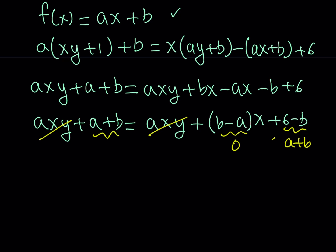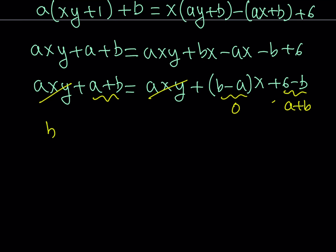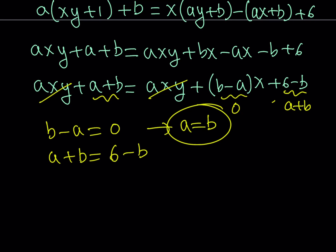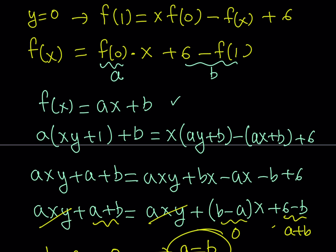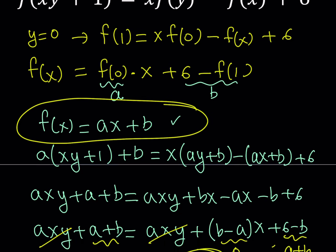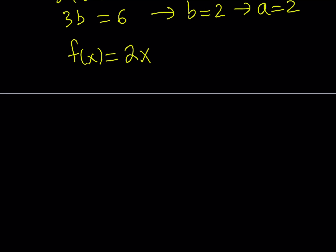This gives us a system of two equations: b minus a equals 0, and a plus b equals 6 minus b. The first equation gives a equals b. Substituting into the second: b plus b plus b equals 6, so 3b equals 6, therefore b equals 2 and a equals 2. Since f of x equals ax plus b, the solution is f of x equals 2x plus 2, and that is the only solution to this equation.